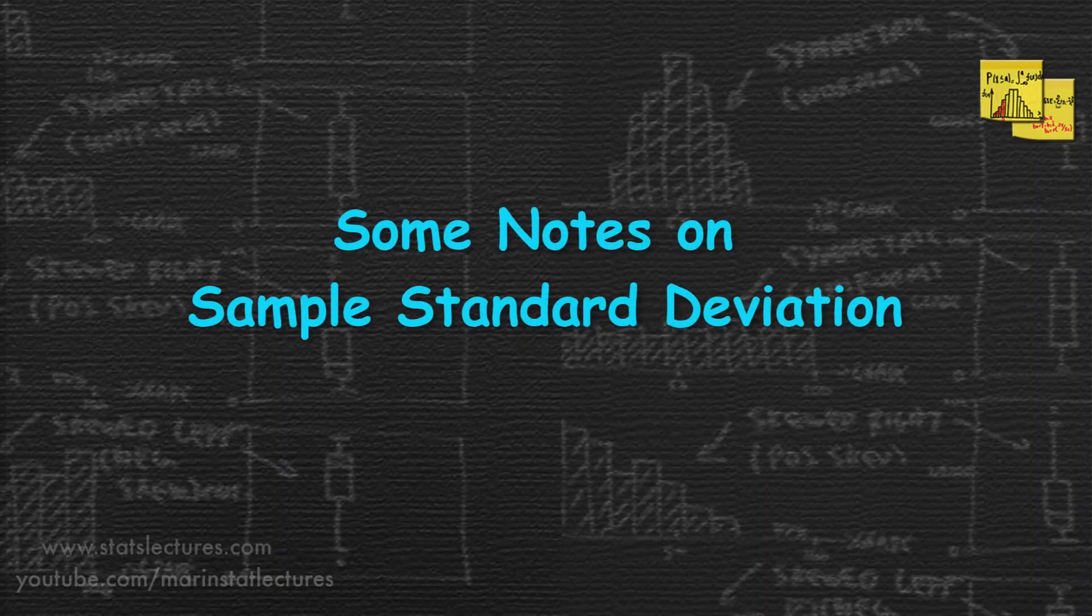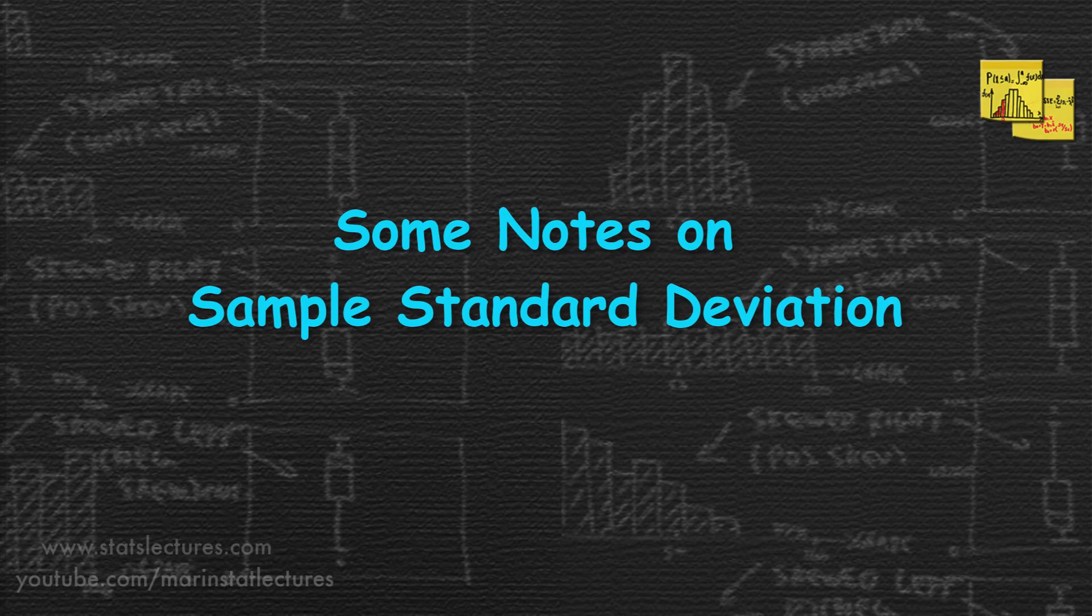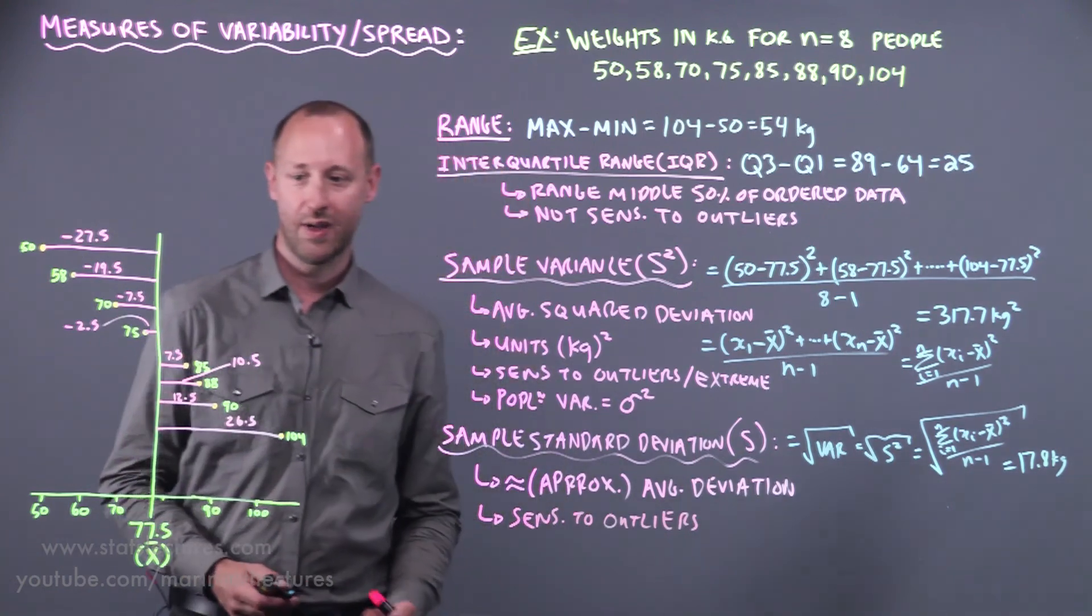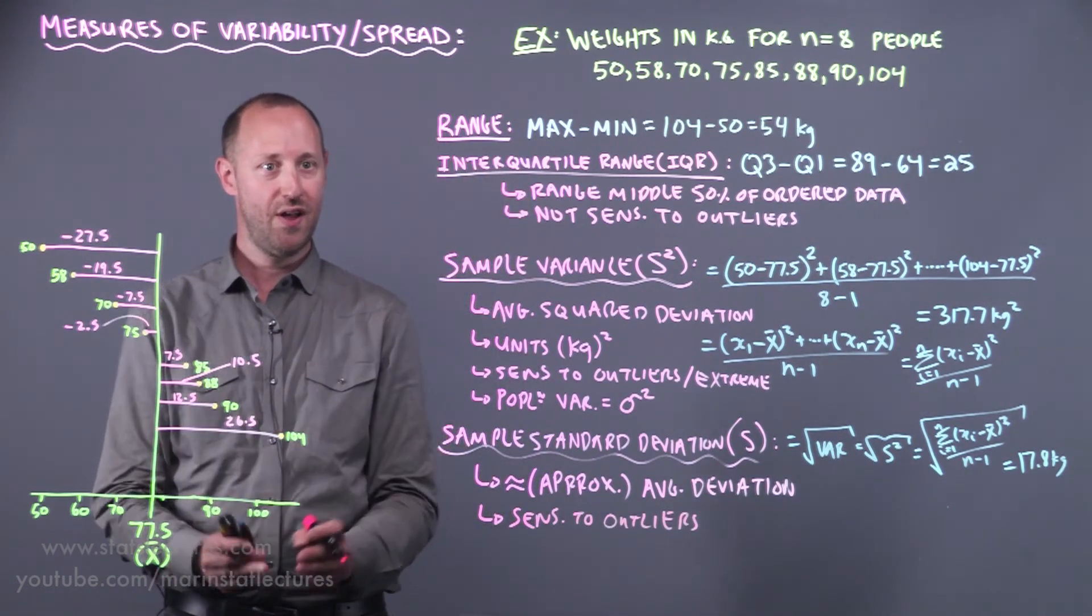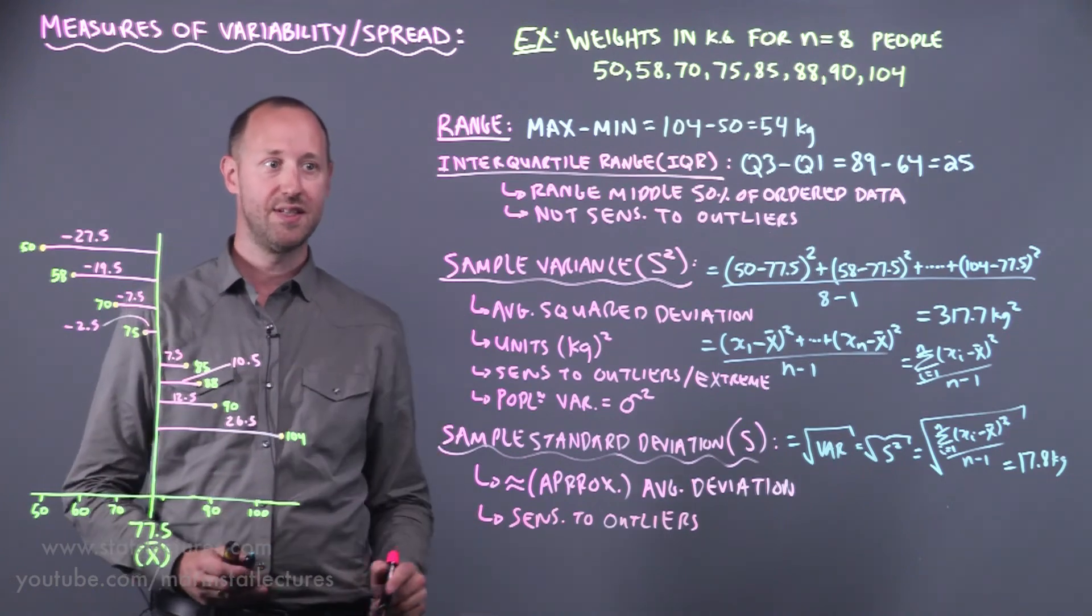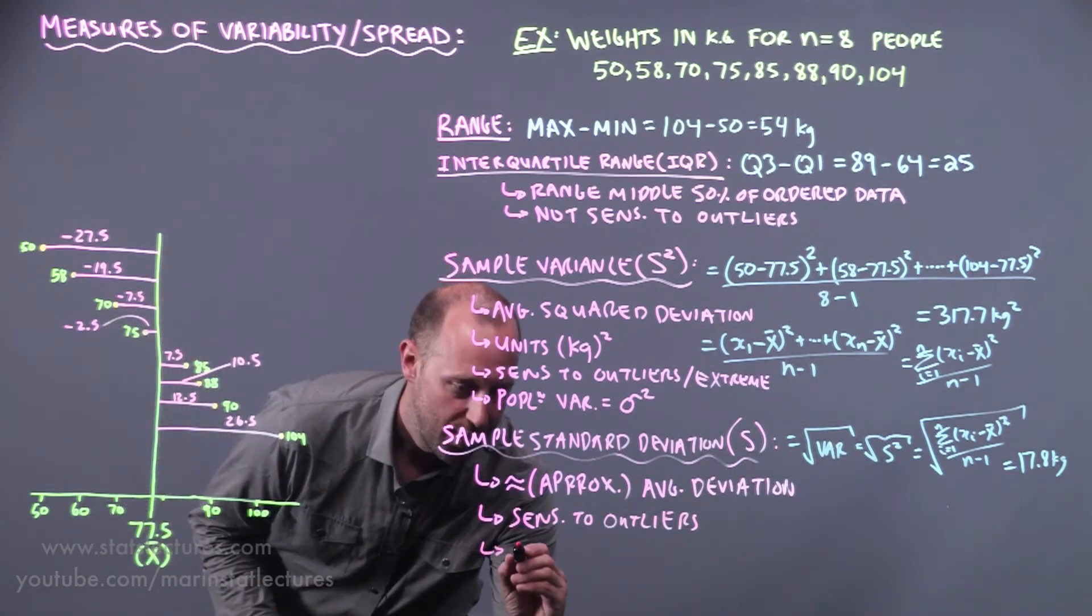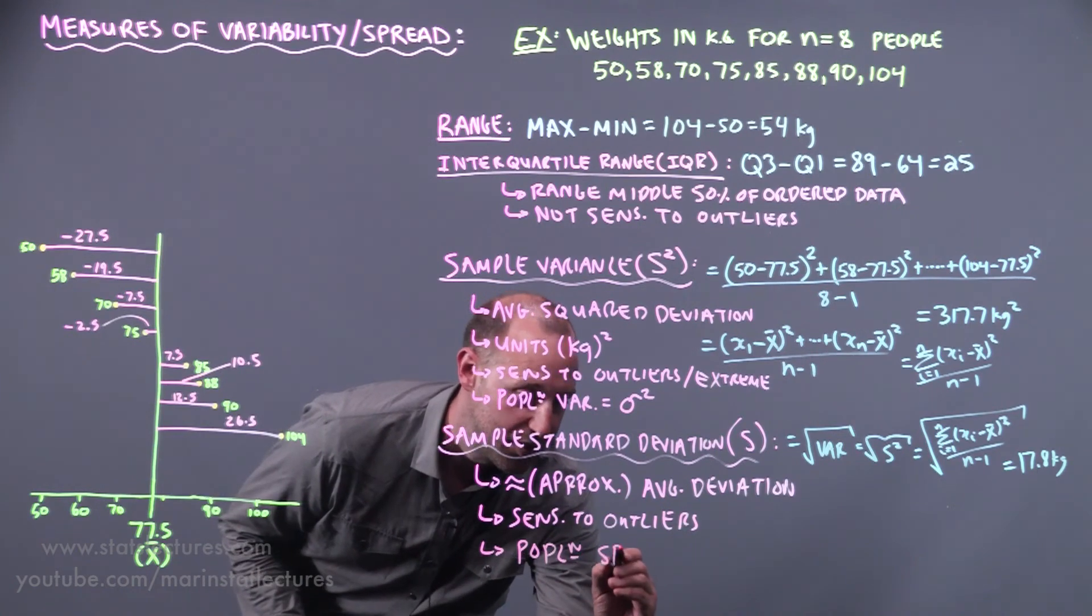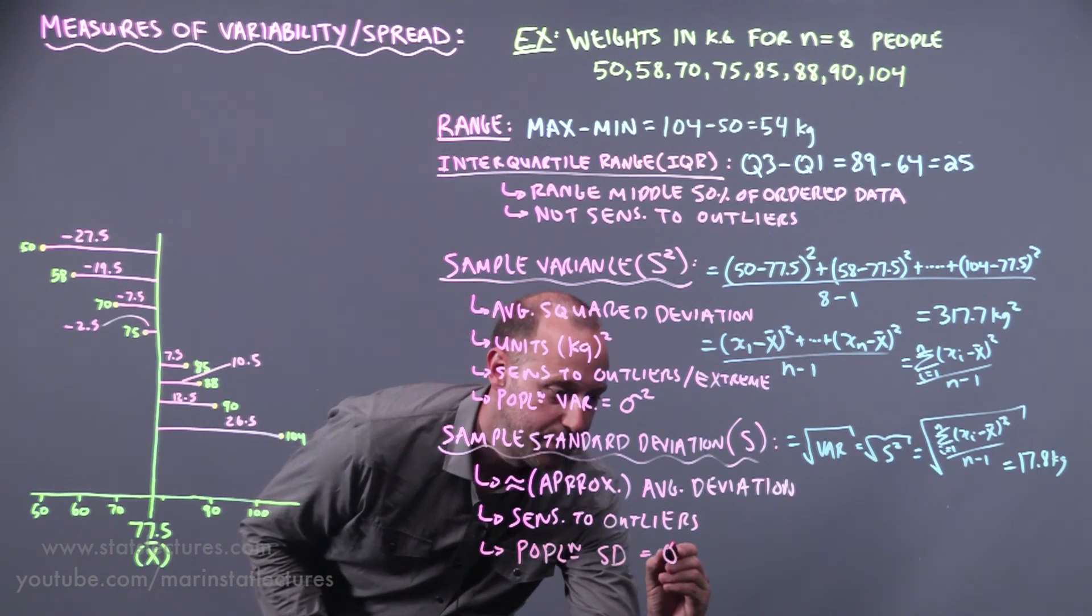Some important notes about the sample standard deviation. It's also sensitive to outliers. If there's an extremely large value that creates a large error or large deviation and that increases the standard deviation. If we're talking about the population standard deviation we write that using sigma.